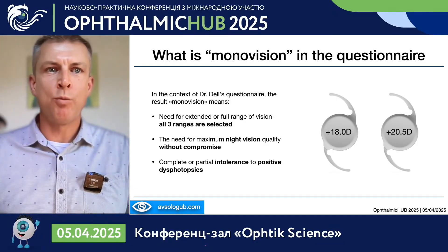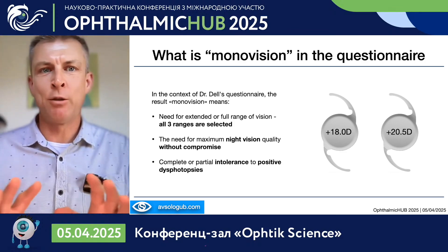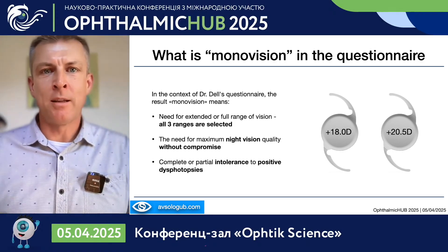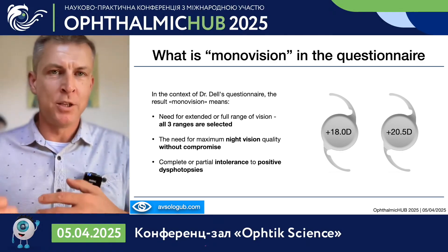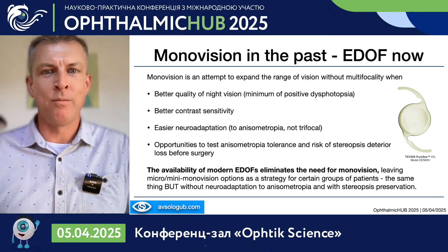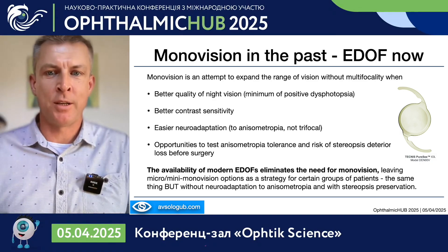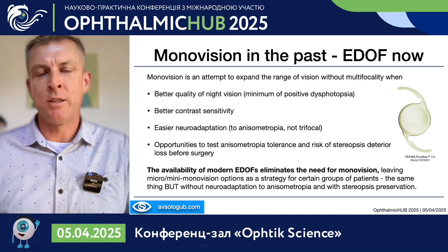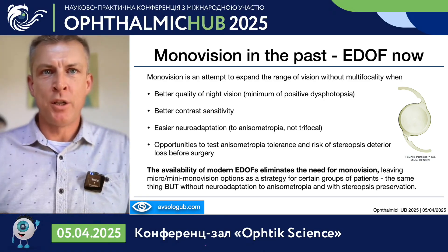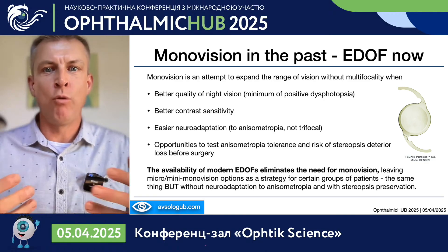Monovision is an alternative approach to achieve vision without compromises between near, far, and night vision quality — though it has its limitations. Talking about full monovision in 2025 doesn't make much sense, because we now have advanced monofocal or enhanced range of vision intraocular lenses — EDOF technology — even without going to trifocal or full range-of-vision lenses. We now have enhanced monofocal lenses for mini-monovision and modern EDOF lenses for micro-monovision.